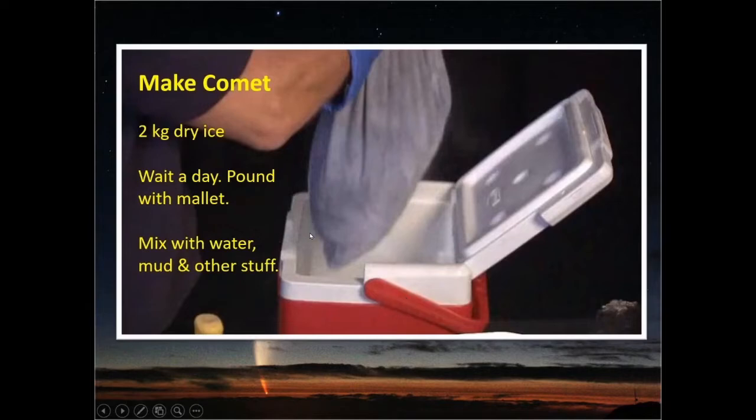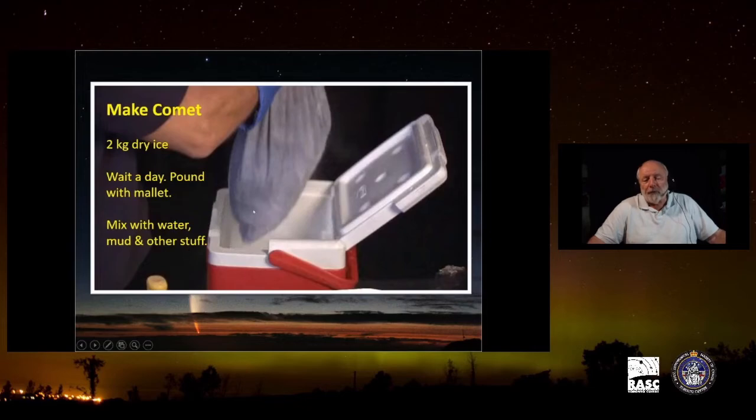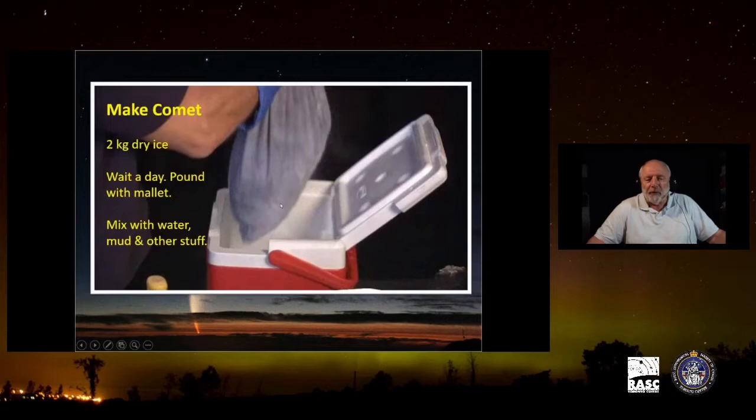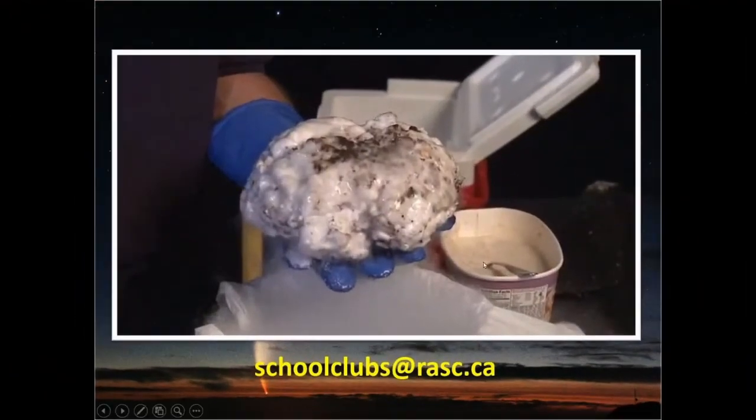I love making comets. You basically buy some dry ice, maybe a little more than two kilograms, and let it sit for a day because that softens it. You pound it with a mallet to break it into little pieces. Mix it with water while wearing insulating gloves and mix it with mud and other stuff. There's a little bit of ethanol on comets. This is what the comet looks like and it's really neat to do in front of kids. I put in a plug for the school clubs that I'm working on. If you know anybody interested in running a school club, there's all sorts of materials available.